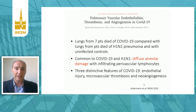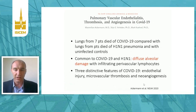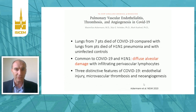That study also shows that COVID-19 has three distinctive features compared to H1N1: endothelial injury, microvascular thrombosis, and neoangiogenesis — reflecting diffuse and important involvement of the pulmonary vascular tree.